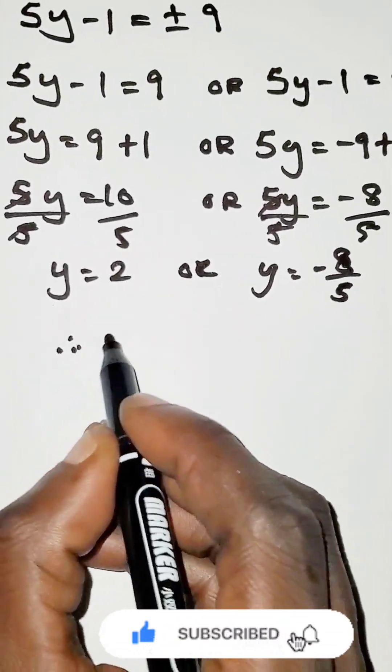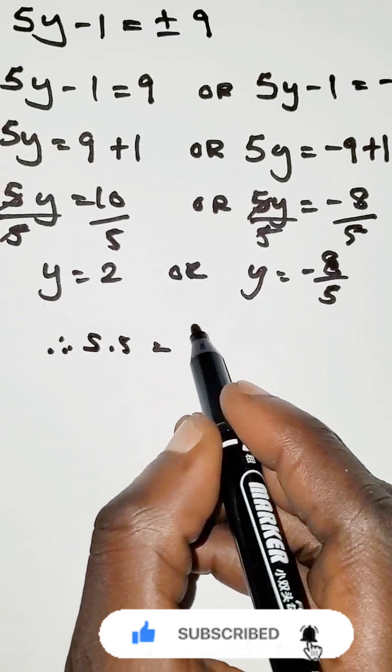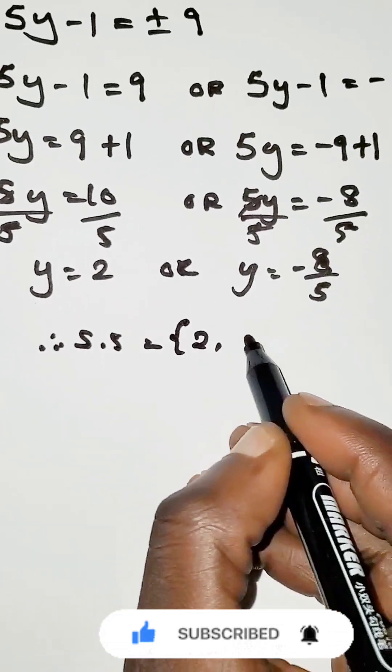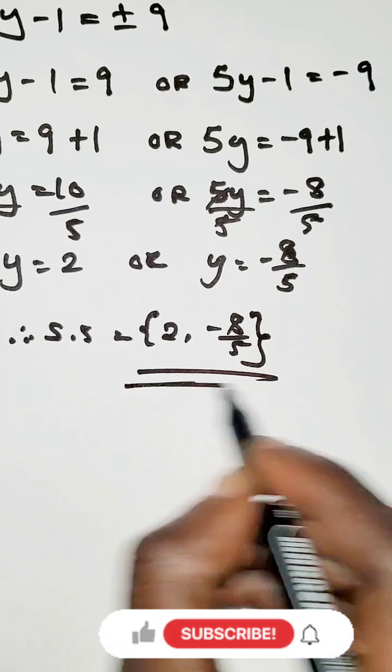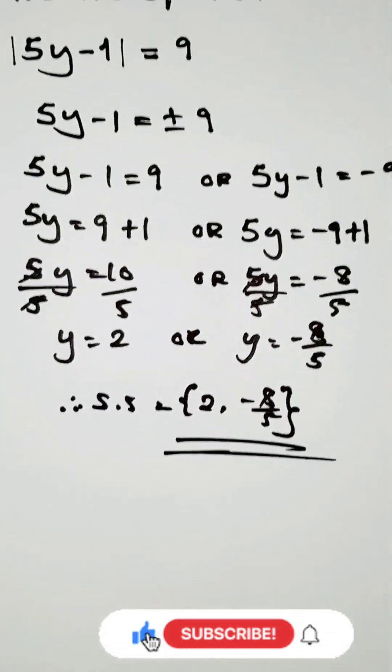Therefore, the solution set is equals to 2 comma negative 8 over 5. Simple, right? Good.